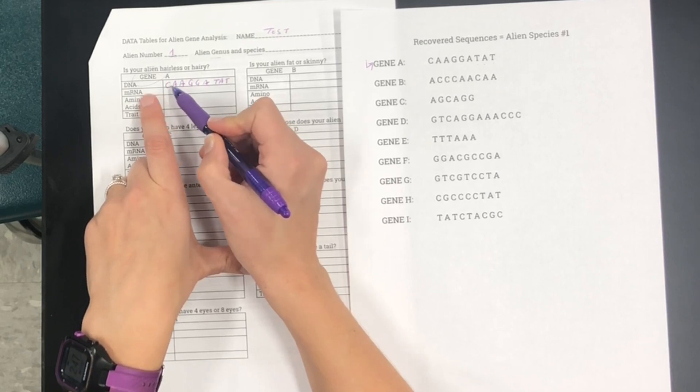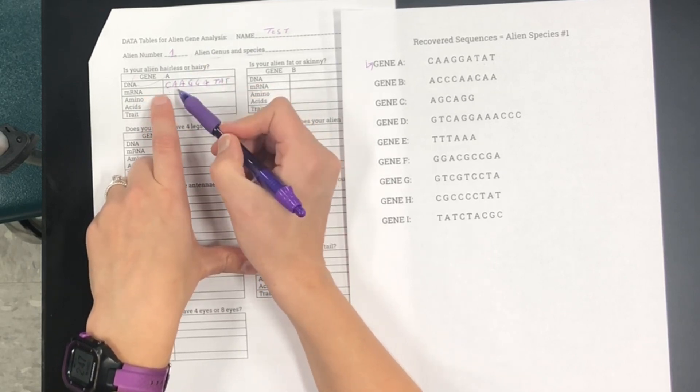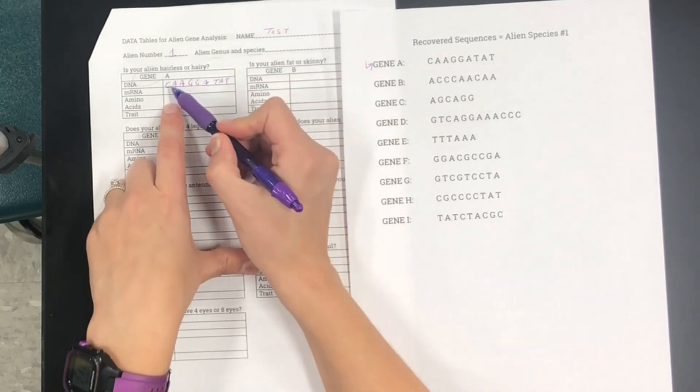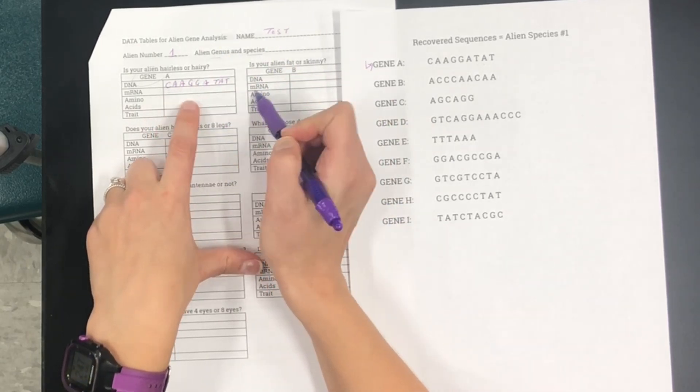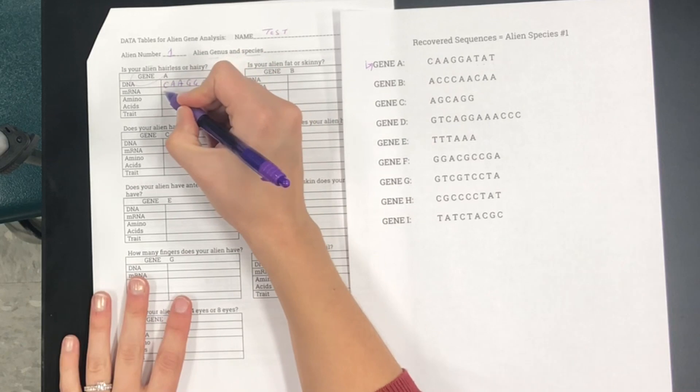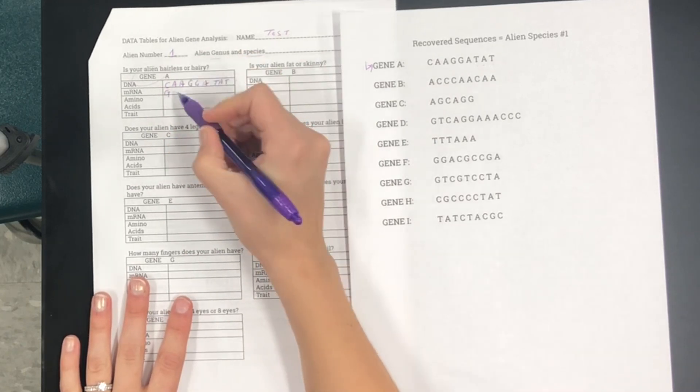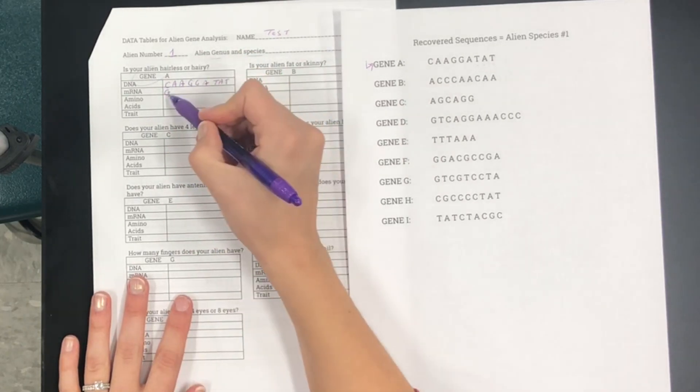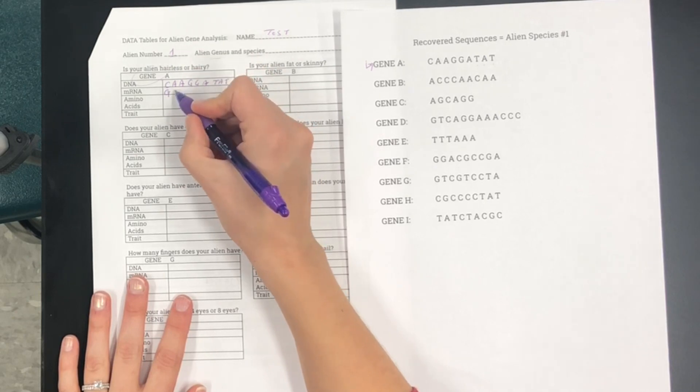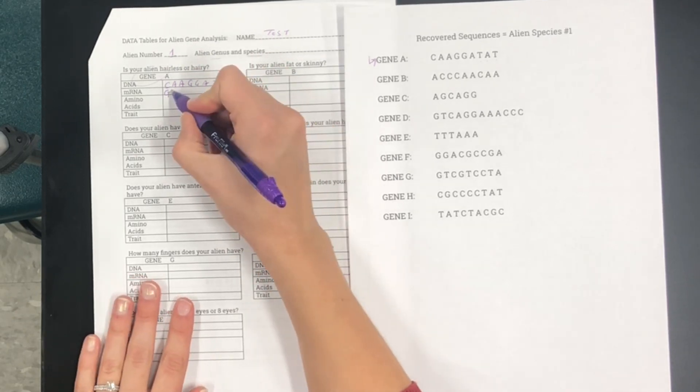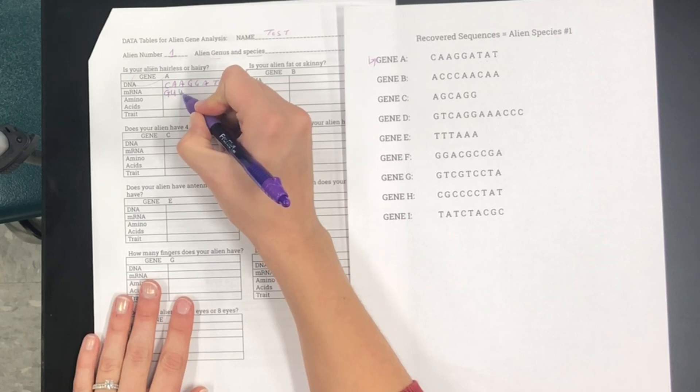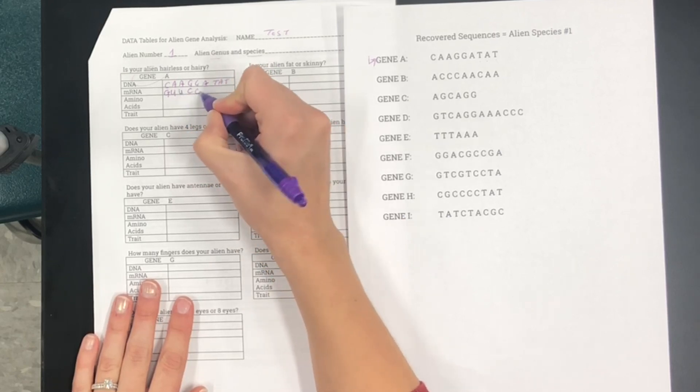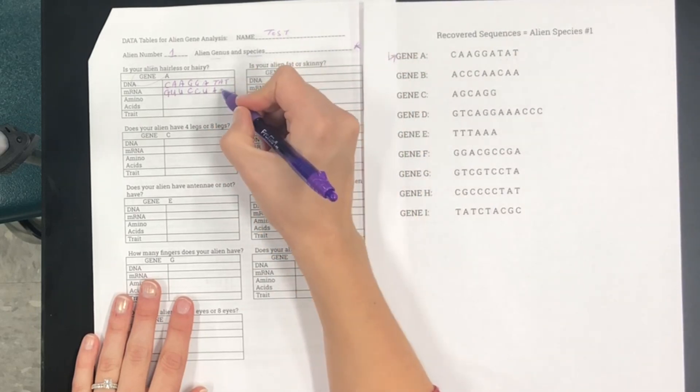All right so now we have to transcribe it into mRNA and to do that you're going to make sure that you find the complementary RNA strand that matches. So we would put a G here because that would be the complement to C and A would normally pair with T in DNA but remember in RNA this is going to be a U, another U, C, C, U, T is complement to A, another U and another A.